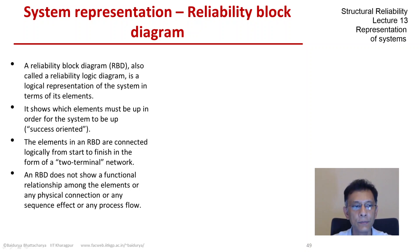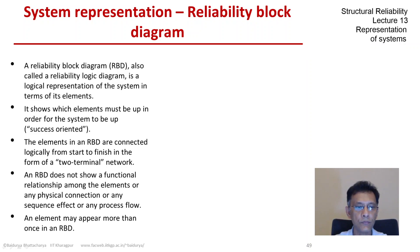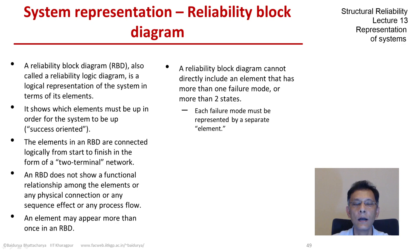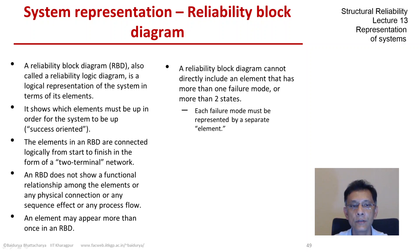It's important to note that an RBD does not show any functional relation among the elements, any physical connection among the elements, any sequence effect, or any process flow — it is just a logical construct. An element may appear more than once in an RBD. An RBD cannot directly include an element that has more than two states or more than one failure mode. If you have a multi-state element, then each failure mode or each success mode must be represented by a separate element logically.